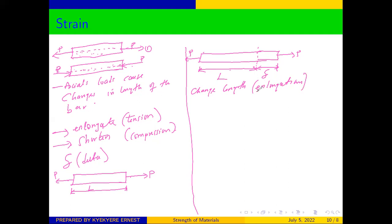And this elongation, which we are referring to as delta, the elongation over the original length of the material before the loads were applied is what we refer to as strain.